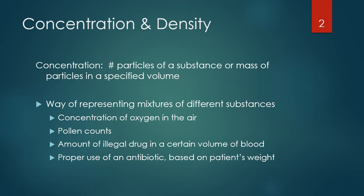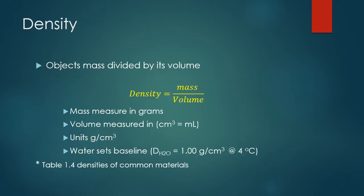There are different ways of representing mixtures through concentration — we'll look at that in relation to oxygen in the air, pollen counts, and proper use of antibiotics based on patient weight. For this chapter, we're going to focus on density calculations. To calculate density, you take the object's mass and divide it by its volume. The equation is: density equals mass divided by volume.